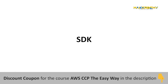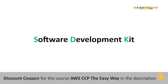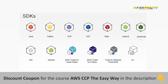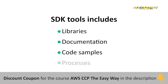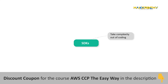Now comes SDK. What exactly is SDK? SDK stands for Software Development Kit. It is a set of software tools and programs used by developers to create applications for specific platforms. SDK tools include a range of things including libraries, documentation, code samples, processes, and guides that developers can use and integrate into their apps. SDKs are designed to be used for specific platforms or programming languages, and they take the complexity out of coding by providing language-specific APIs for AWS services.